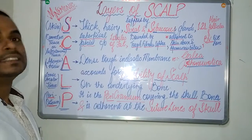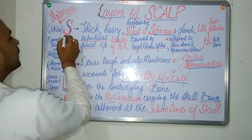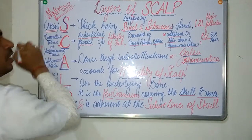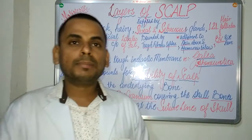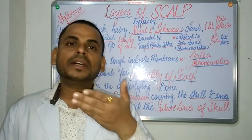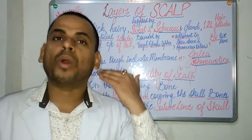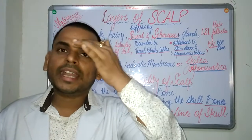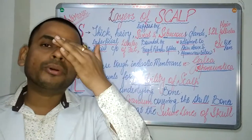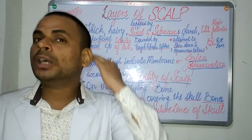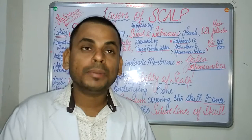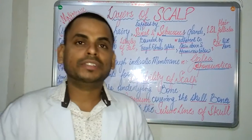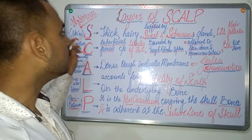Beginning with S: the S of SCALP refers to the Skin. The scalp is a soft connective tissue that covers the cranial vault, including the forehead. The first and outermost layer of the scalp is the skin.